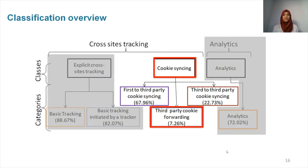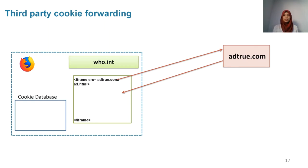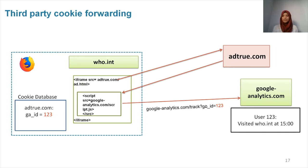Now moving to the second class, cookie syncing, I will present what we refer to as third-party cookie forwarding, which is present on over 7% of the websites. Coming back to our example, the user is visiting the World Health Organization, and inside the website we have content from addtrue.com. A request will be sent to addtrue to fetch this content. We noticed that in this kind of behavior, third-party trackers include analytics services. In this example, addtrue.com is including Google Analytics scripts — I'm marking analytics services in green and third-party trackers in red. The script sets a cookie on the user's browser with the domain addtrue.com, so by definition the cookie is a third-party cookie. Then it sends a request to Google Analytics with the third-party cookie as part of the parameters. Using this request, Google Analytics gets to know that user 123 visited the World Health Organization.